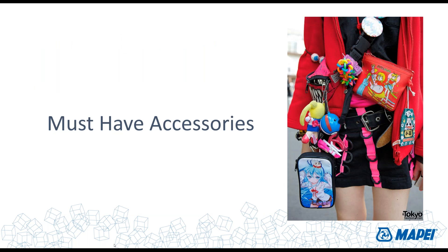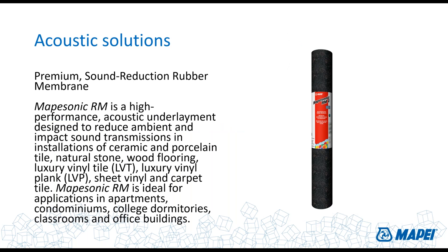Must-have accessories for wood floor installation: first, acoustic solutions. Many installations in multi-family housing require acoustic transmission control from floors above to living space below. Mapasonic RM is available in 2 mm, 5 mm, and 10 mm thicknesses, all usable with our adhesive systems. For example, you can bond the Mapasonic RM rubber to the substrate with Eco 975 and also bond the wood flooring to the Mapasonic RM with 975, creating a robust acoustic-dampened installation. Mapasonic RM is also suitable for ceramic and, in some instances, LVT.